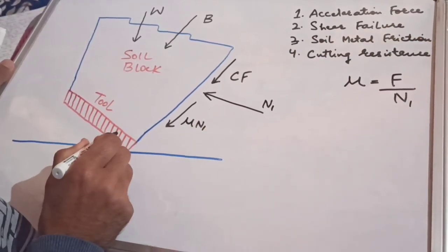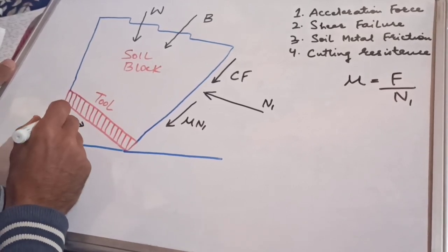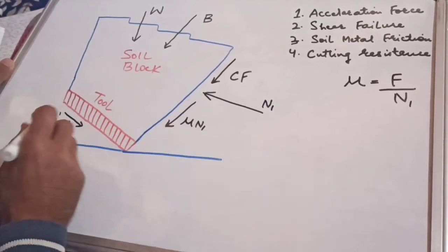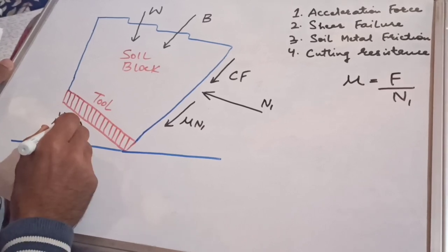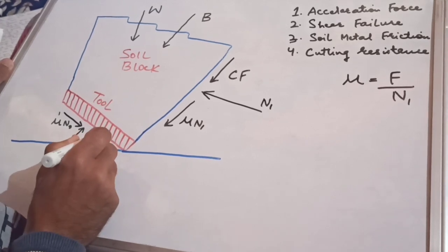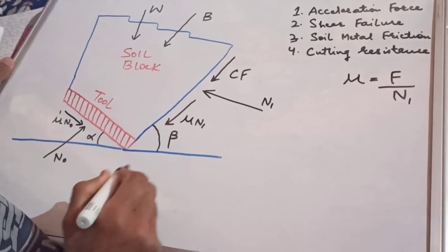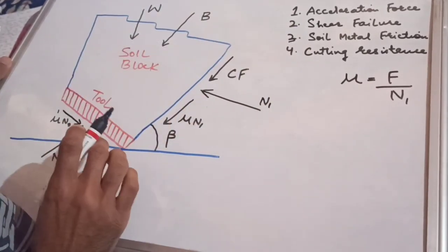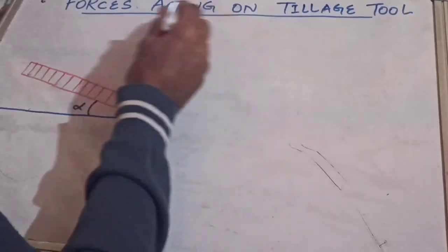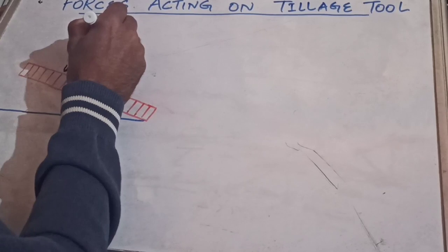When soil interacts with the tillage tool, it results in soil-metal friction, denoted by mu-dash×N0, where mu is the soil-soil friction and mu-dash is the soil-metal friction. It also generates a normal force N0. This tool is tilted at an angle of alpha, which is the tool lift angle, and the angle here is beta. These are the forces acting on the soil block on top of the tillage tool.